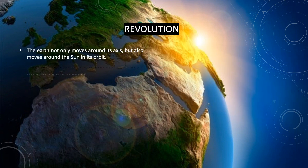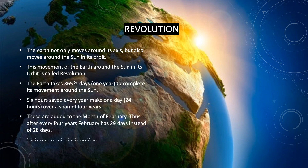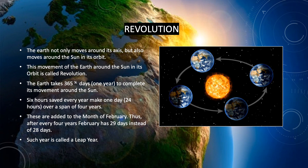Now let's talk about revolution. The earth not only moves around its axis but also moves around the sun in its orbit. Orbit means path or a circular track. This movement of the earth around the sun in its orbit is called revolution. The earth takes 365 and one-fourth days to complete its movement around the sun, which means one year. The six hours saved every year make one day, that is 24 hours, over a span of four years. These are added to the month of February. Thus, after every four years, February has 29 days instead of 28 days. Such a year is called a leap year.